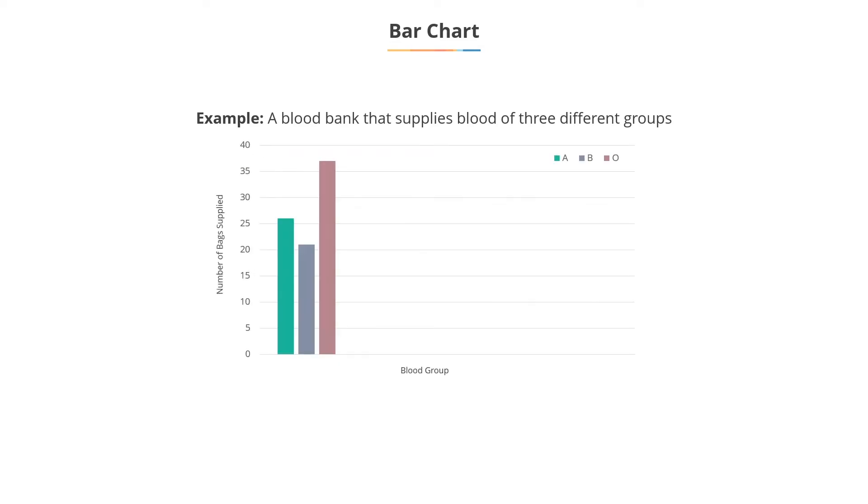Now, this is the bar chart corresponding to the same data in the table, with blood group in the x-axis and number of plastic bags in the y-axis.